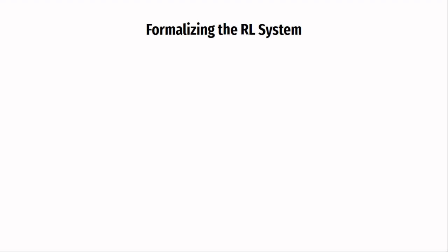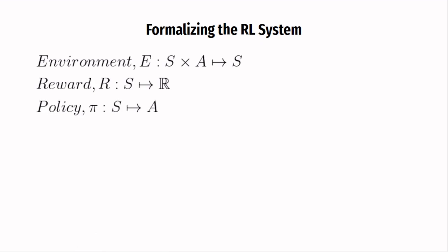Finally, let us summarize the formal components of a reinforcement learning problem. First of all, there is an environment which works with the dynamics. Given a state and action, it returns the next state. There is a reward function which takes in a state and returns the reward for reaching that state. There is a policy which takes in a state and returns an action. There is a value function which takes in a state and gives out the expected return.